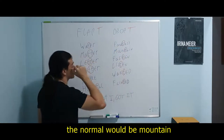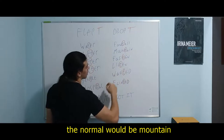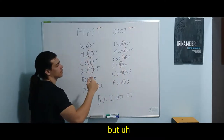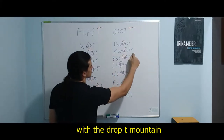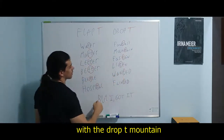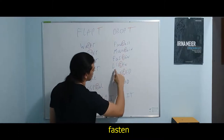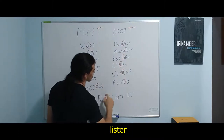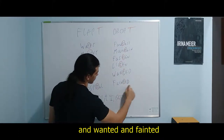The normal way would be 'mountain,' but with the drop T it's 'mountain.' Also: fasten, listen, and 'want it' and 'fan it.'